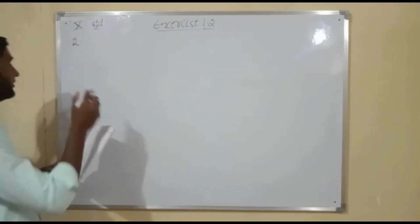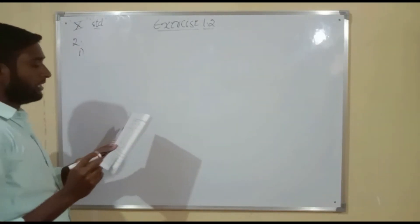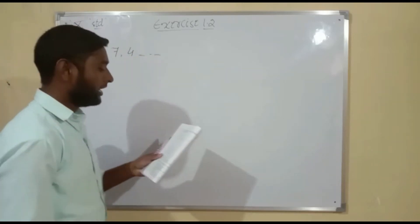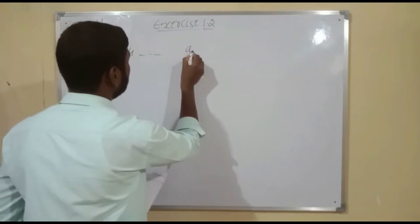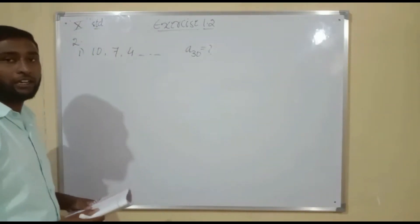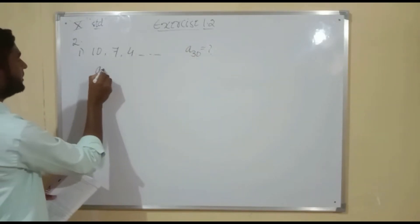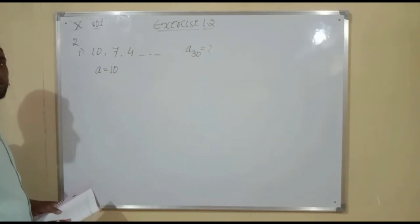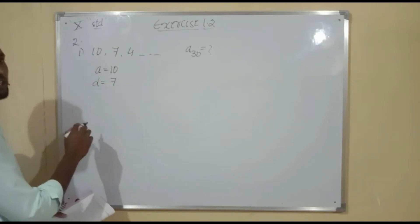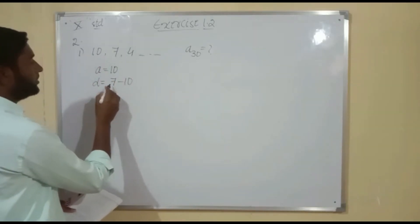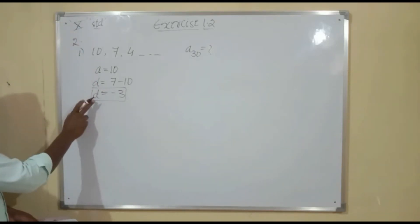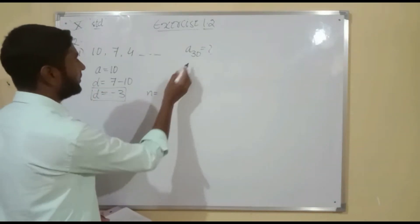In the second part, choose the correct choice and justify. The first question: find the 30th term of the AP 10, 7, 4, and so on. We want A30. Four options are given. To find the answer, we need the first term: A is equal to 10. The common difference D is A2 minus A1, which is 7 minus 10, equal to minus 3. So D is minus 3, and n is 30.